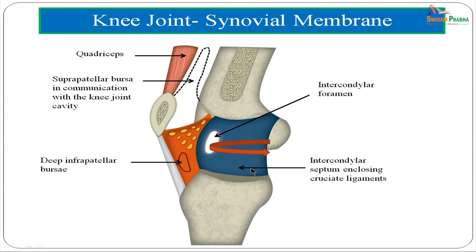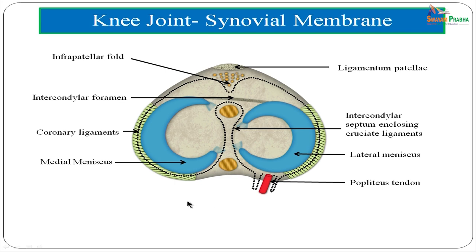The intercondylar septum is a double fold of synovial membrane enclosing the cruciate ligaments. The infrapatellar fold is a small double-layered backward extension below the patella, and the alar folds are extensions lateral to it on either side. The synovial membrane covers parts of the bone within the capsule, excluding articular surfaces, and ceases at the margins of the menisci.